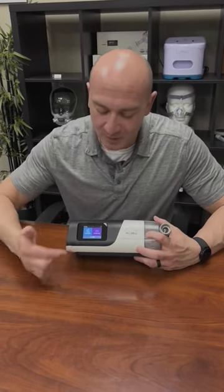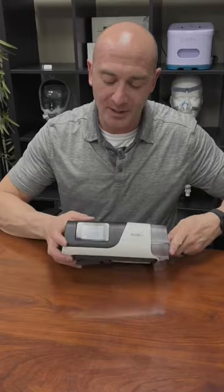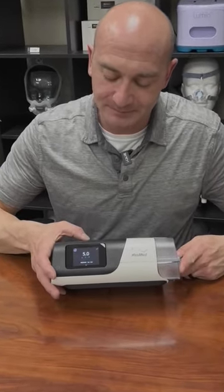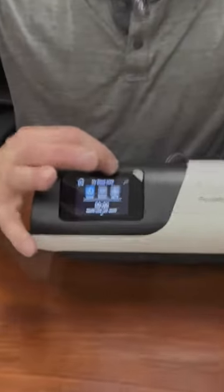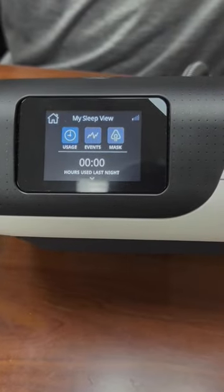So right now, you can see your screen's normal there. If I press the start button, I'm going to cover the hose so it's not quite so loud. Pressure starts up. Now, if I press the stop button, you'll notice in the top left-hand corner, there's a snowflake there. It just means the machine's going through a cooldown.